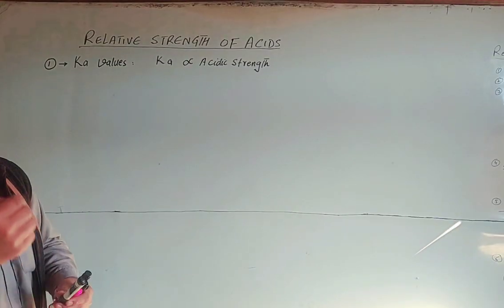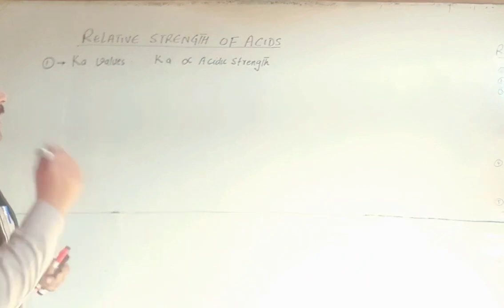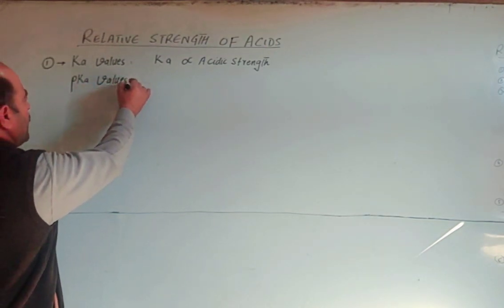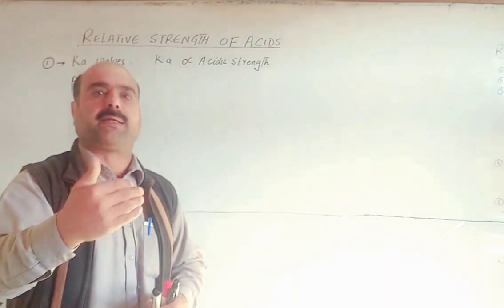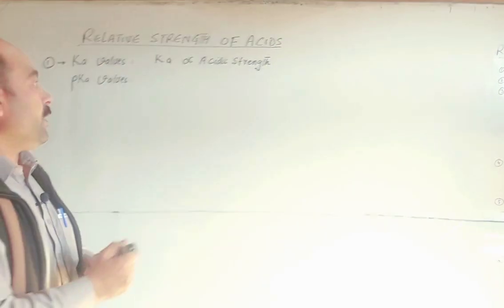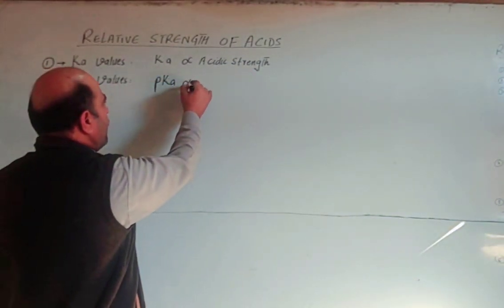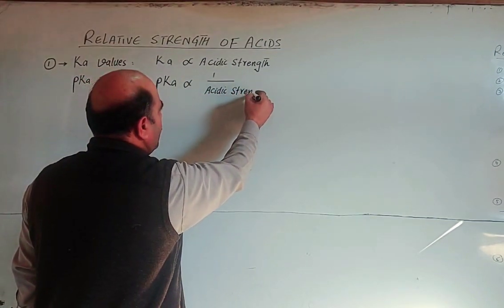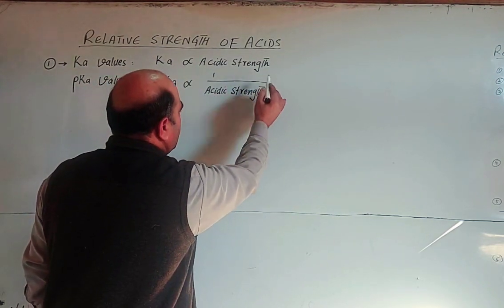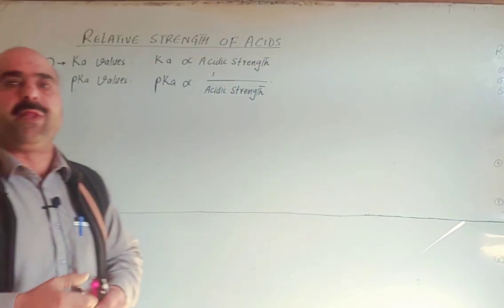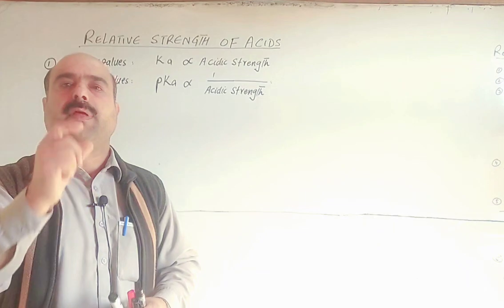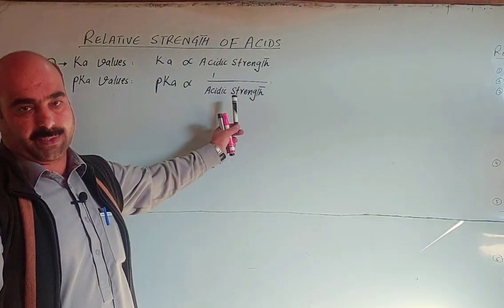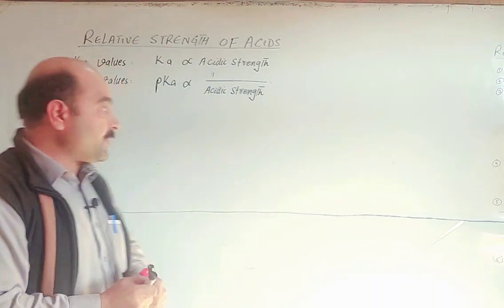When pKa values are given for different acids to compare — which one is the strongest — the pKa value has an inverse relationship with acidic strength. Higher the value of pKa of the acid, weaker will be the acidic strength. So the acid with the lower pKa value is the strongest acid.